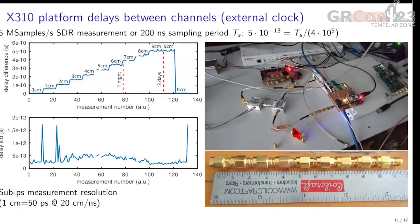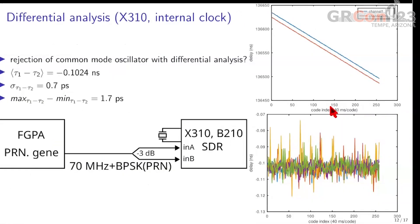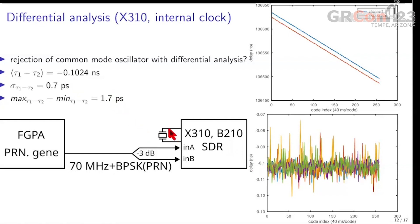Now that we're convinced we can measure time delay with much better than the sampling period between two channels of the X310, we might wonder whether it's actually necessary to clock the X310 on the same reference as the FPGA. Running the X310 on its internal oscillator, you now have a drift of one oscillator with respect to the FPGA, since the frequency is different and phase is the integral of frequency. Yet both channels see the same drift, so that when we do a differential measurement — subtracting one curve from the other — we end up with a flat line. Again, we have a standard deviation of about one picosecond with maximum minus minimum of about two picoseconds.